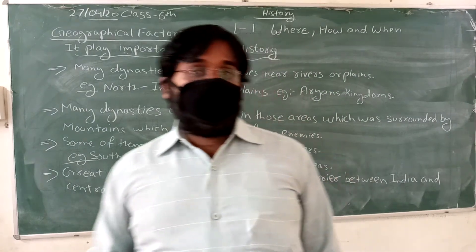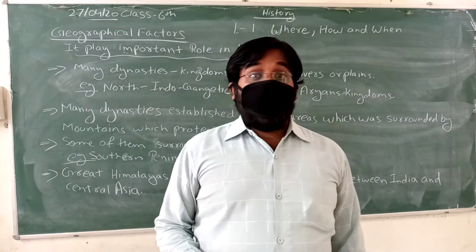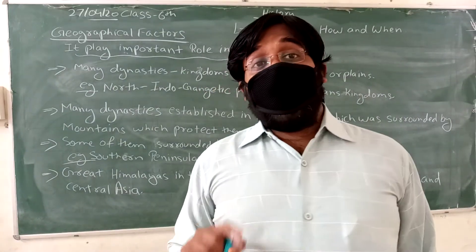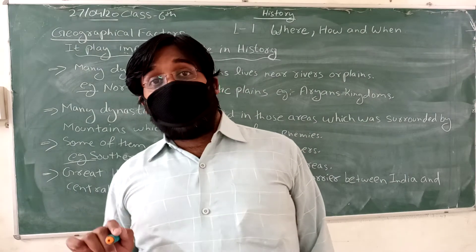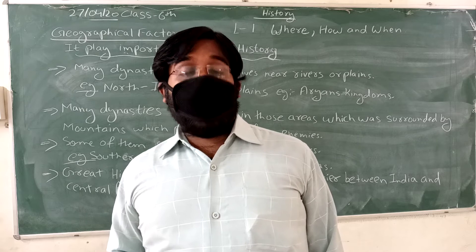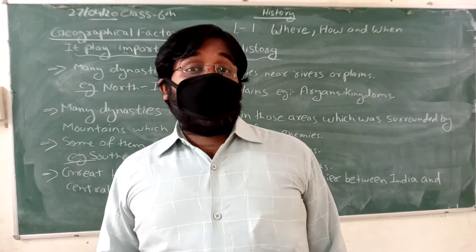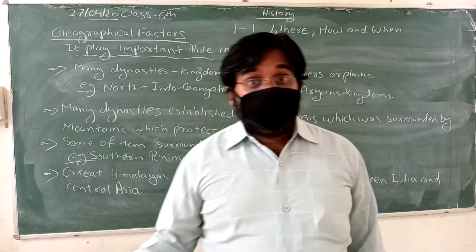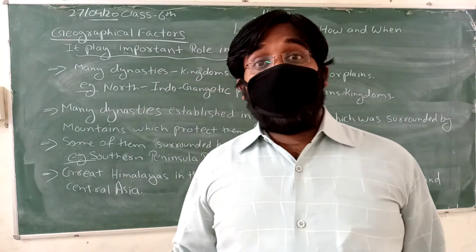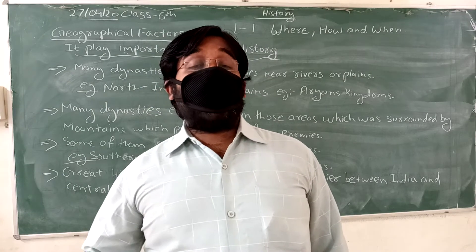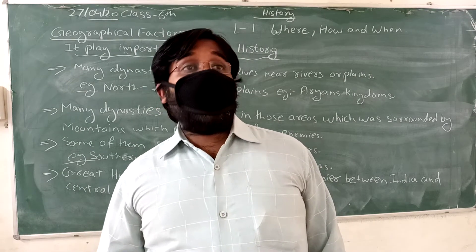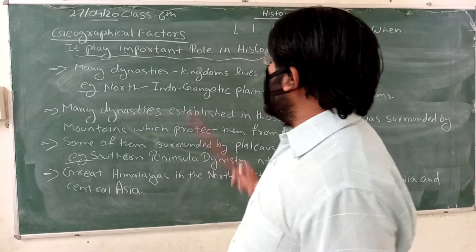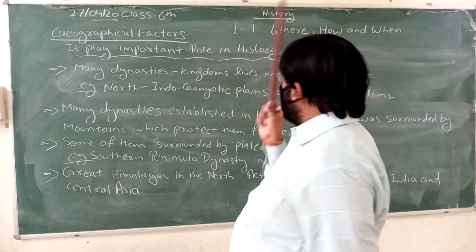Some of the rulers, some kingdoms and dynasties, when they entered India, they had to settle. When they settled, the things they required were: first, protection from enemies; second, a river — water — the need for a river. For their life to be settled and for better crop cultivation, they settled where water was easily available. From this, those dynasties, empires, or kingdoms were able to expand. So, these are the important geographical factors. They play an important role in history.